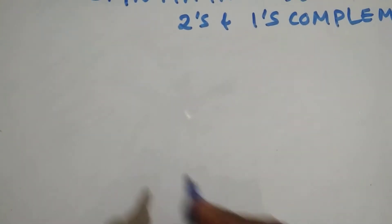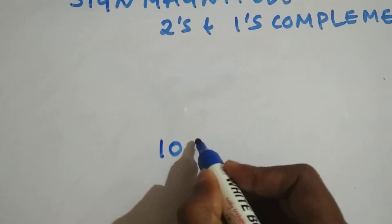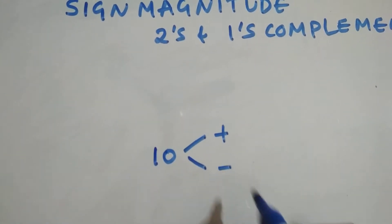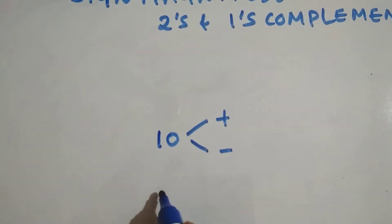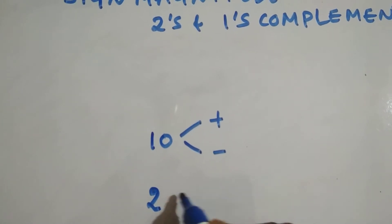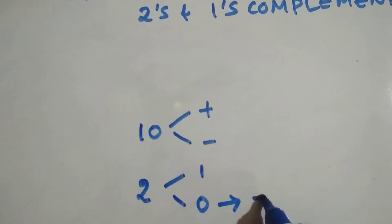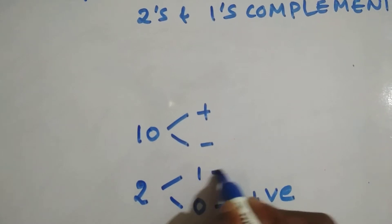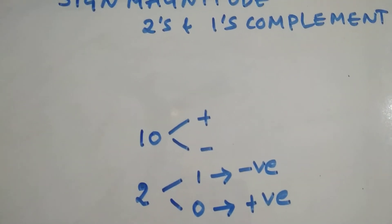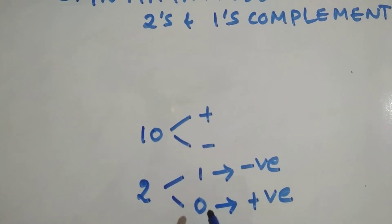We use decimal numbers which have base 10. In decimal numbers, we distinguish positive and negative numbers by using a plus sign and a minus sign. Whereas in binary, the base is 2, and we don't have a plus sign or minus sign. We only have 1 and 0 — where 0 indicates positive and 1 indicates negative.